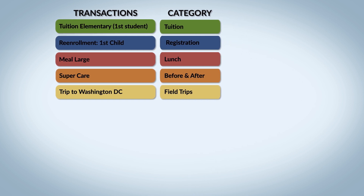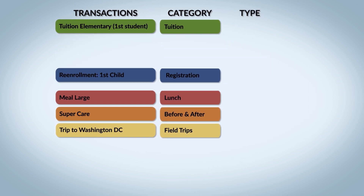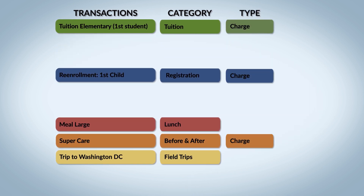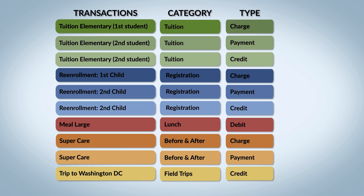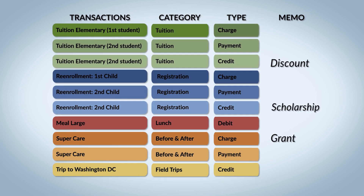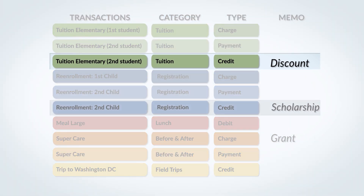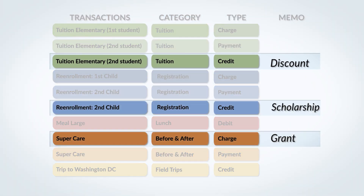Transactions can also be divided into types, including charges, payments, and credit or debit memos, which would allow you to account for things like discounts, scholarships, and grants.